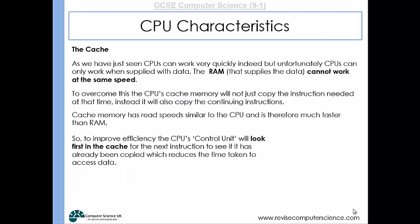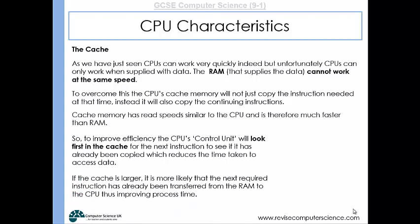The CPU's control unit will first look in the cache for any instructions, because the cache often stores regularly used instructions and ones anticipated to be used next. The CPU will always look in the cache first, and hopefully will immediately get the instructions it needs to keep running fast. If the cache is larger, it's more likely to have the required instructions, meaning you don't have to rely on another delivery from RAM. So a larger cache generally means faster performance for the CPU.